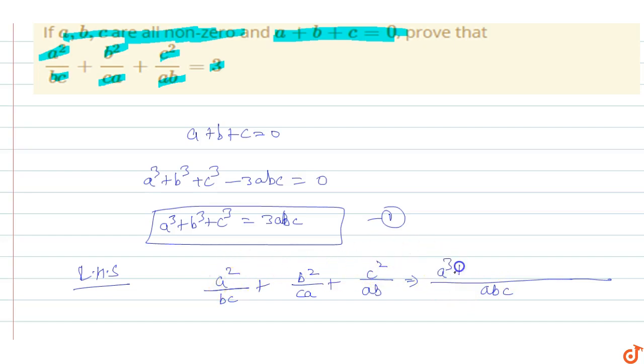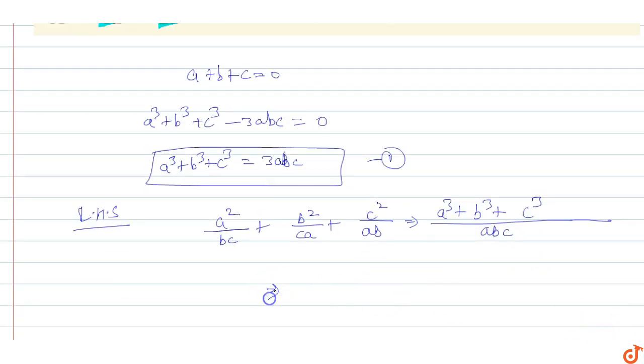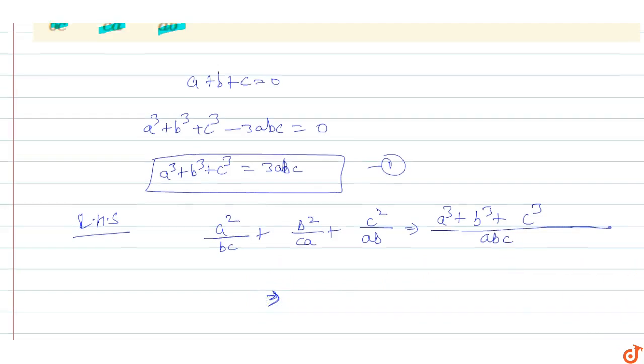bc divided into a is a, a times a square is a cube. ca divided into b is b, b times b square is b cube. ab divided by c is c, c times c square is c cube. Okay, so a cube plus b cube plus c cube.